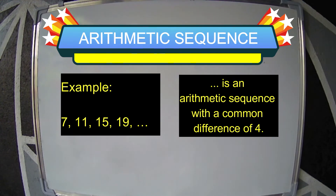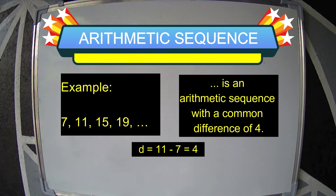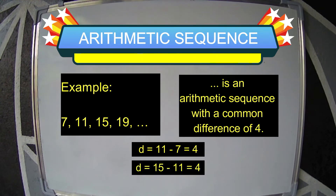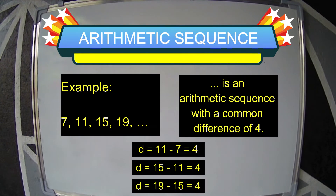The value 4 is obtained by subtracting 11 and 7, 15 and 11, and 19 and 15.